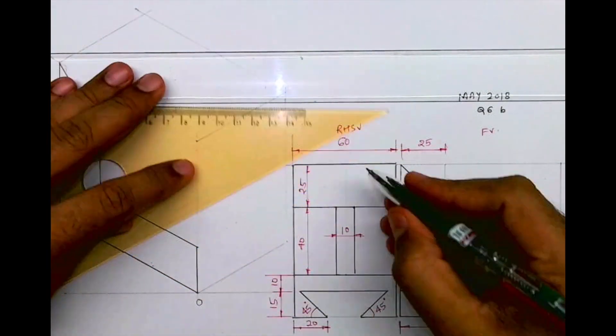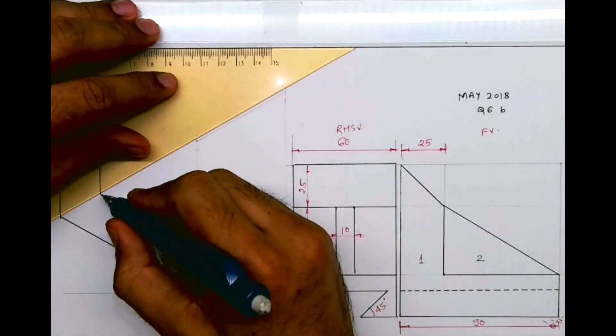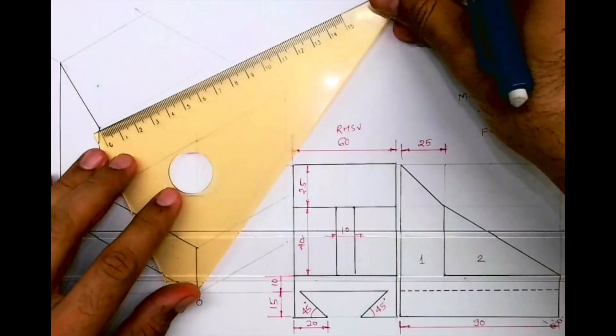Then this entire part 1 is behind, so you'll go behind by 60. Take each and every point behind by 60 and you join, so you'll get part 1.